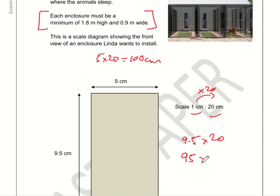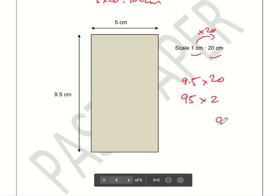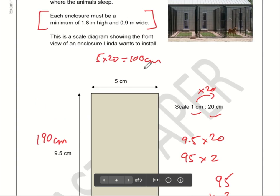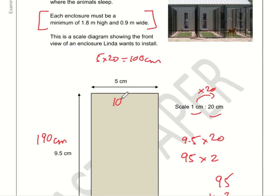9.5 times 20 is the same as 95 times 2, because we make the number 10 times bigger then 10 times smaller. 2 times 5 is 10, carry 1; 2 times 9 is 18, plus 1 is 19 — so this is 190 centimetres. The enclosure is 100 centimetres by 190 centimetres.